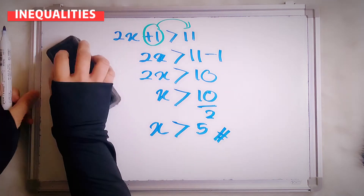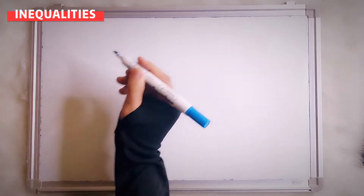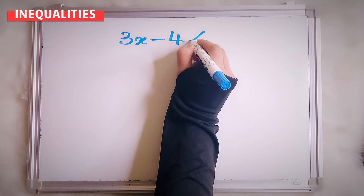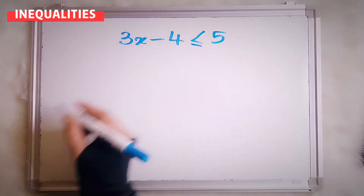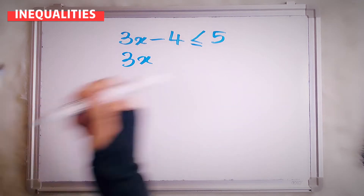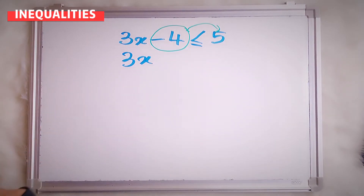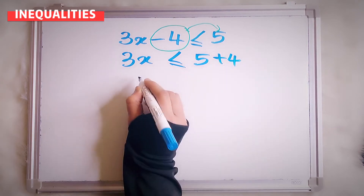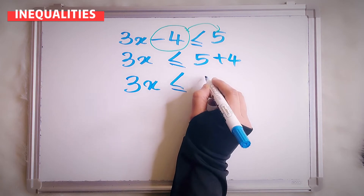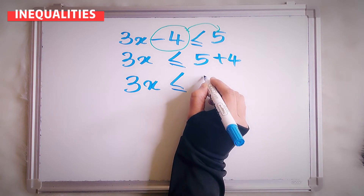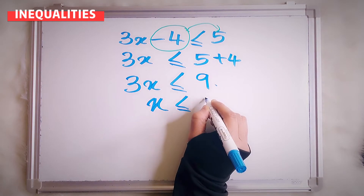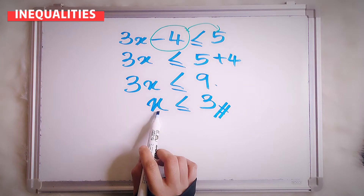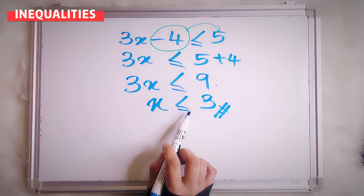Next. Let's say I give you 3x minus 4, less than or equal to 5. So now, 3x — I want to move minus 4 to a different side. The sign still the same. So, 5 minus 4 becomes plus 4. So 3x is less than or equal to 9. So x now equals — less than or equal to 3, because 9 divided by 3.